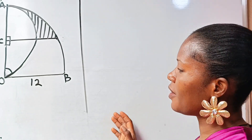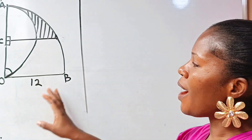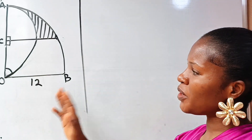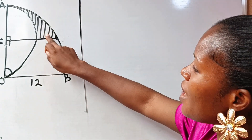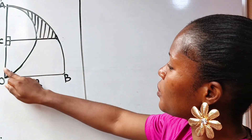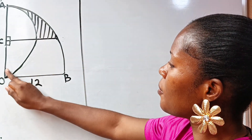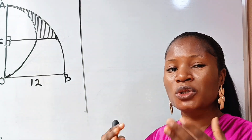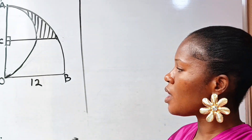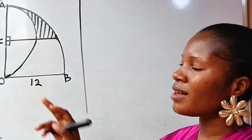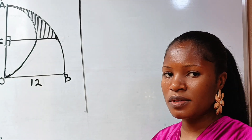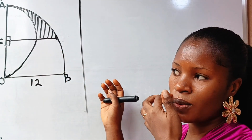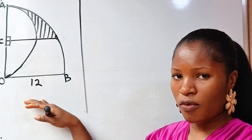Welcome back to my channel. We have an amazing math question to solve. In this question, we are asked to find the area of this shaded portion. Because from here to here is 12, and that is the only information given to us. So this means that the radius of this circle is 12.